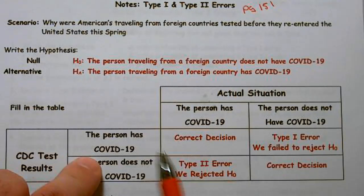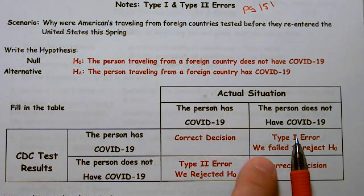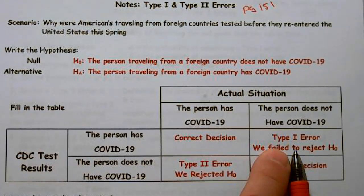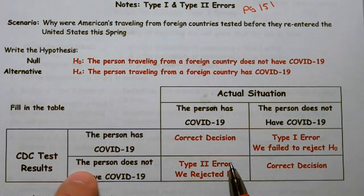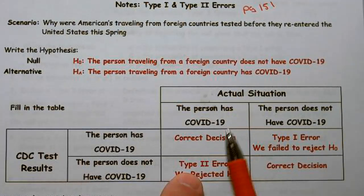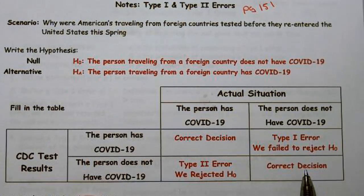The actual situations: they don't have COVID, but we say that they do — we committed a Type 1 error because we rejected the null in favor of the alternative by mistake, because they do not have COVID-19. Over here, the person has COVID-19 and we say that they don't — that's a Type 2 error. And over here, the person does not have COVID-19 and we say they don't — correct decision.